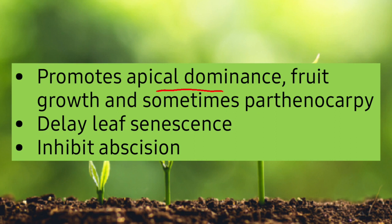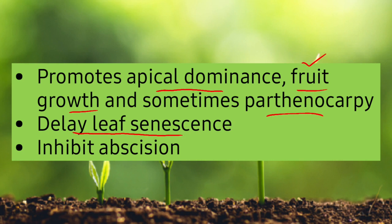Auxins also stimulate fruit growth and sometimes parthenocarpy. Parthenocarpy is the production of fruit without fertilization — in this case, seeds are not formed but fruits are still produced. Auxins also cause a delay in leaf senescence.